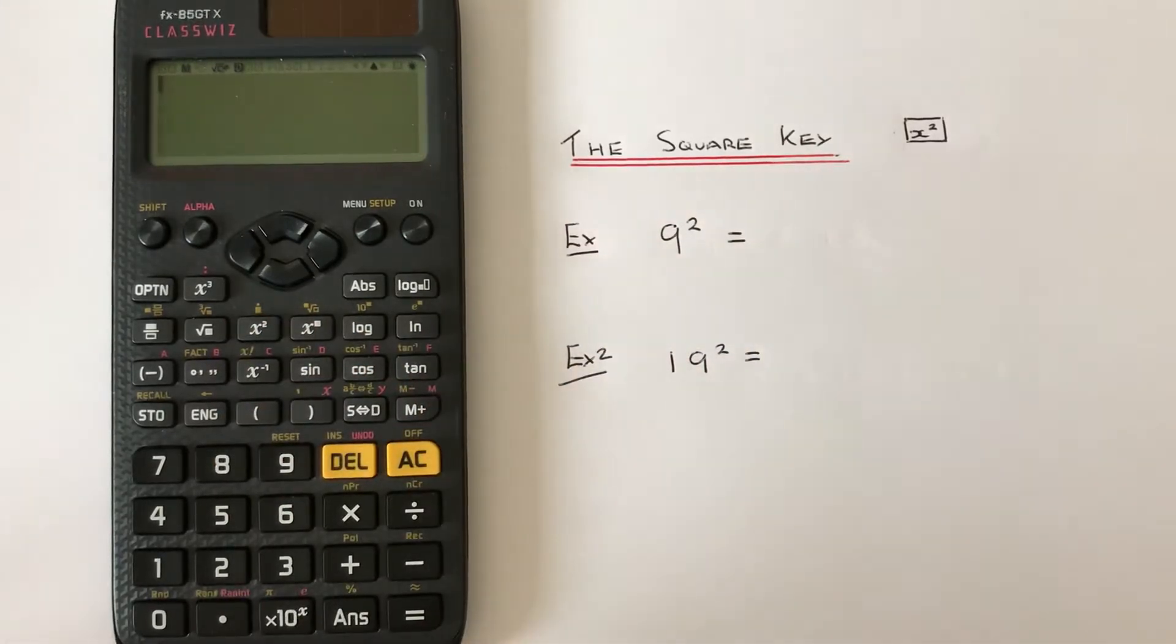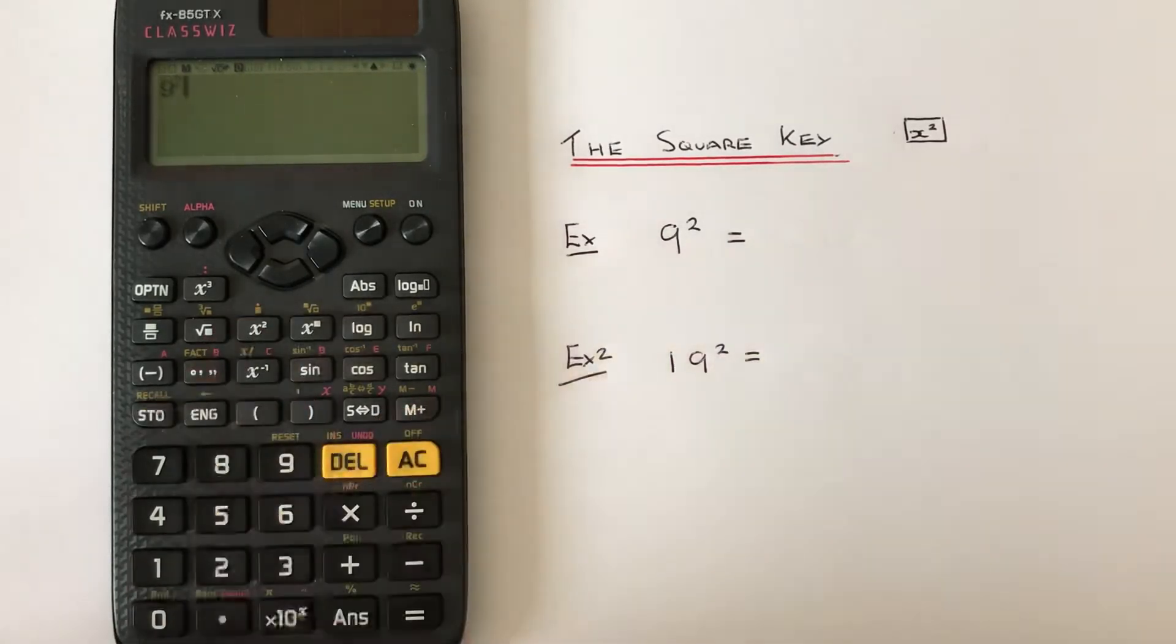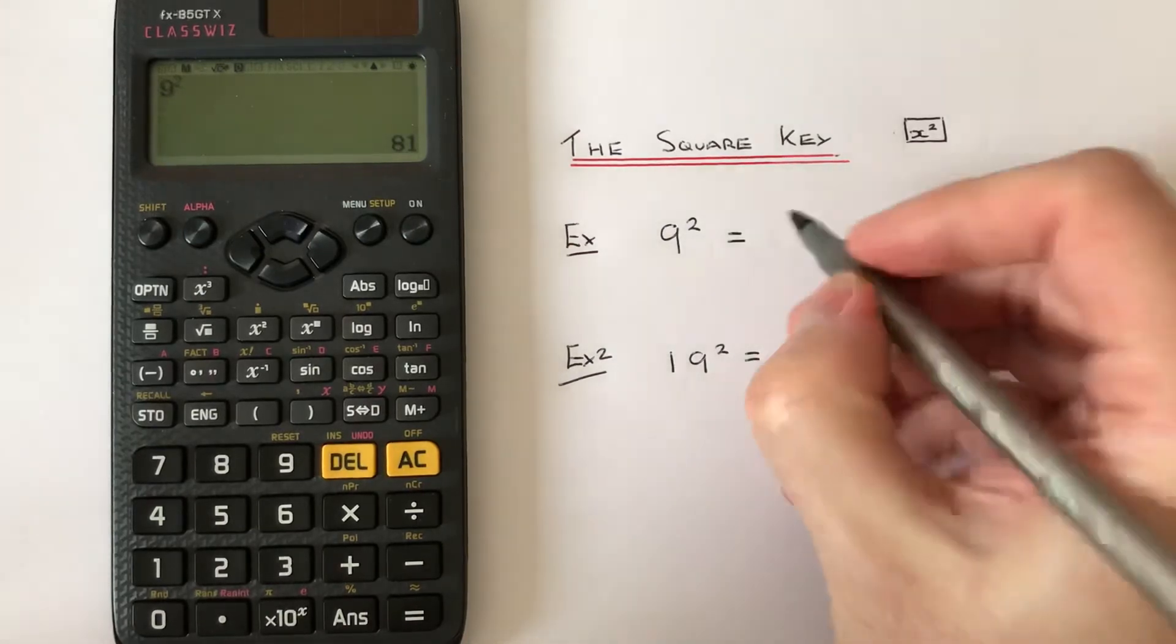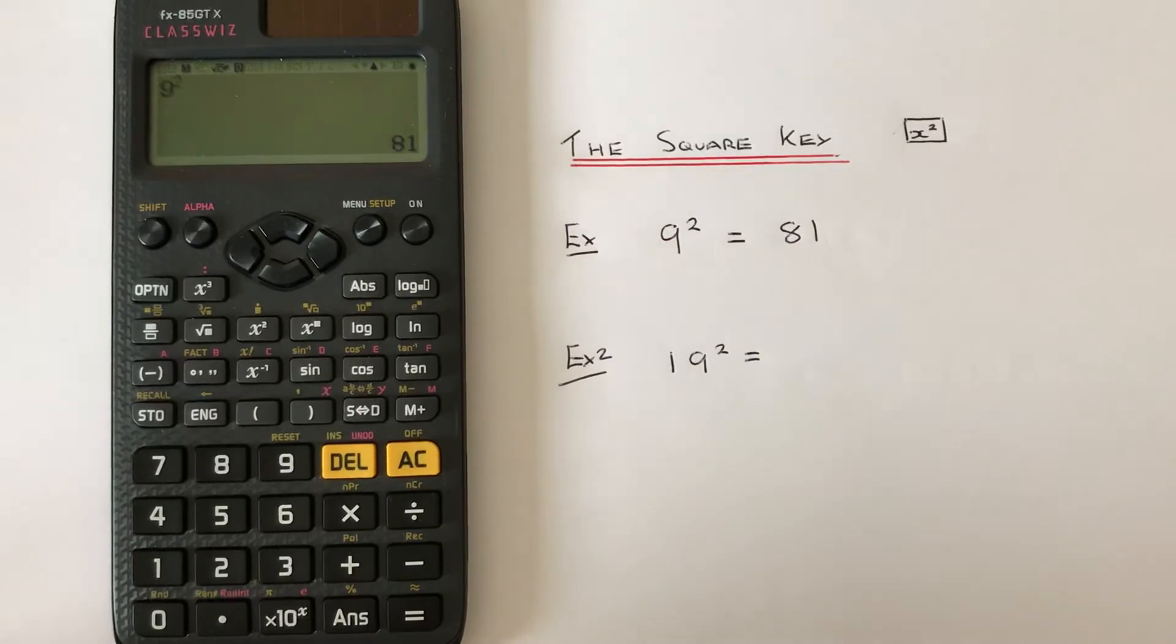Let's have a look at example one. We've got to work out 9 squared. So if we press 9, then x squared, press equals, and we get the answer 81. So let's have a look at example 2 then.